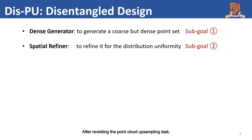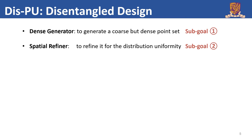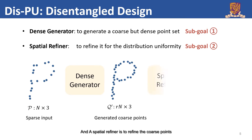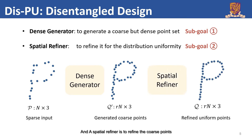After revisiting the point cloud upsampling task, we propose to disentangle the task into two sub-goals. A dense generator first generates a coarse but dense point set with less details to roughly describe the underlying surface. And a spatial refiner refines the coarse points to better cover the underlying surface for distribution uniformity.